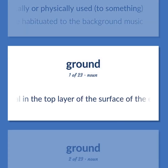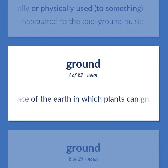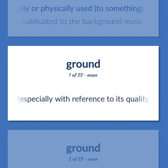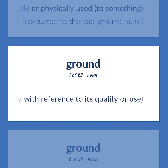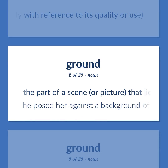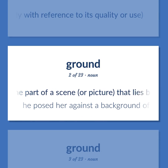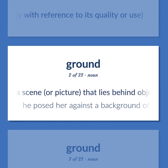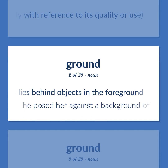Ground: Material in the top layer of the surface of the earth in which plants can grow, especially with reference to its quality or use. The part of a scene or picture that lies behind objects in the foreground. He posed her against a background of rolling hills.